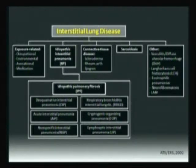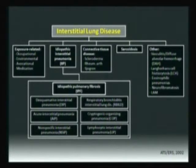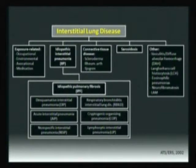This box — exposure-related disease — there is no question they are not going to change that much over time. The same is for sarcoid, the same is for certain disease entities. But this is the real black hole in this classification: idiopathic interstitial pneumonia. What do we mean by that?